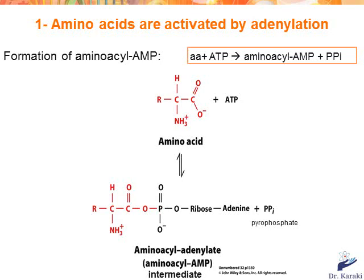Now I'm going to detail the two reactions. The activation reaction is catalyzed by a specific aminoacyl-tRNA synthetase, also called an activating enzyme. The first step involves the condensation of an amino acid and ATP to form the enzyme-bound intermediate aminoacyl-adenylate (or aminoacyl-AMP), with pyrophosphate as a product.